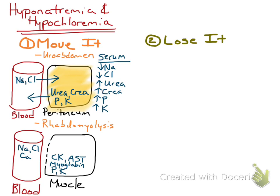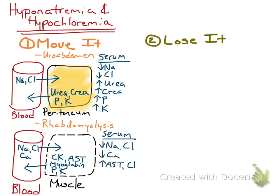If there's massive muscle injury, there's lysis of the cell membrane, and things leak out of the myocyte. So CK, AST, myoglobin, phosphorus, and potassium all leak out of the muscle cell and increase within the blood. Sodium, chloride, and calcium then move down their concentration gradient from blood into the empty space left by the dead muscle, so they decrease in blood. With rhabdomyolysis, the expected serum or plasma changes include decreases in sodium, chloride, and calcium, and increases in AST, CK, myoglobin, phosphorus, and potassium.